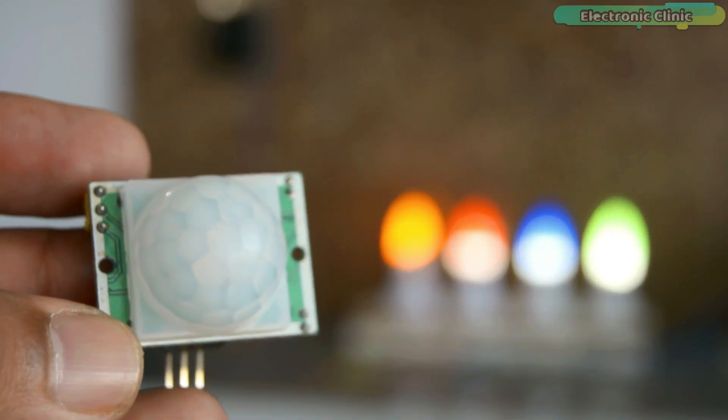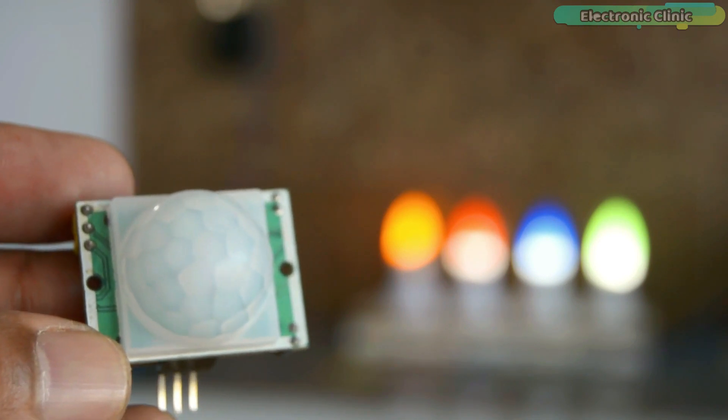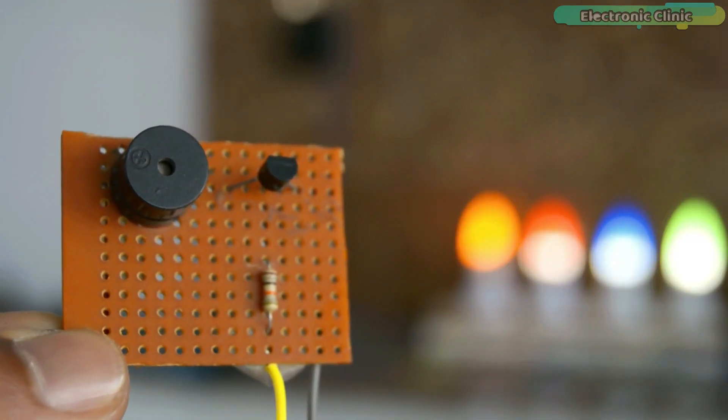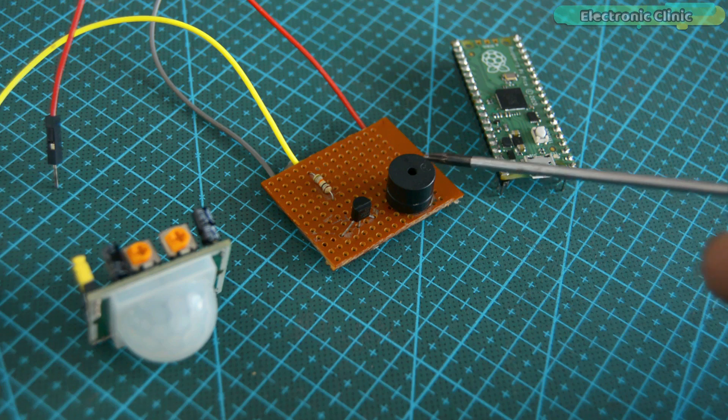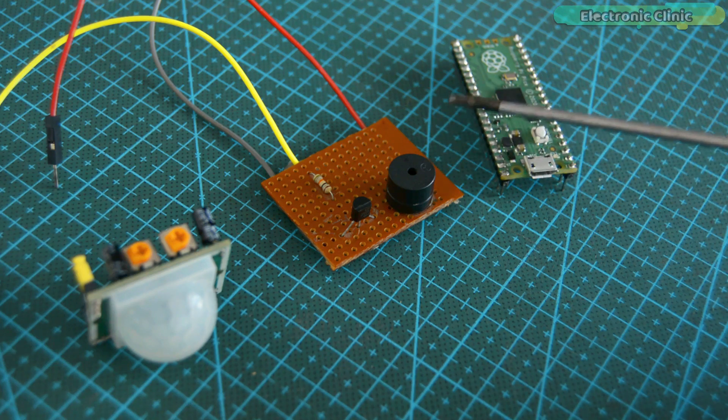The PIR sensor triggers the Pico board each time motion is detected and then the Raspberry Pi Pico board turns on the buzzer. Let's go ahead and take a look at the circuit diagram.